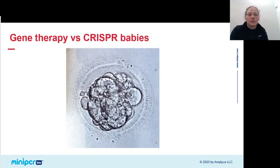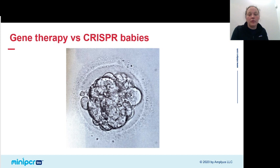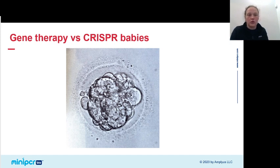Just a quick note on the difference between this kind of gene therapy and CRISPR babies that you may have heard about in the news. In the gene therapy case, the only cells in Victoria's body whose sequence we changed were the hematopoietic stem cells — they just make blood cells. That change is not able to be inherited by any children that Victoria may have after having this treatment. That's really different from editing an embryo, where every cell in the resulting person's body would contain the edit and they would be able to pass it on to their children.